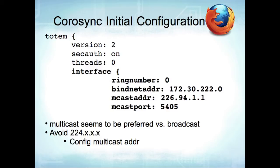With multicast, you send one packet to the router and the router forwards it to anyone subscribed — so it's more efficient. You specify a multicast address; they do say to avoid 224.x.x.x because that is a configuration multicast address. Talk to your networking people about the right multicast address. There's also a time-to-live setting, which is only valid when using multicast. You can increase it up to 255, but that's only used on a routed network — if you're not on a routed network, leaving it at one is fine.